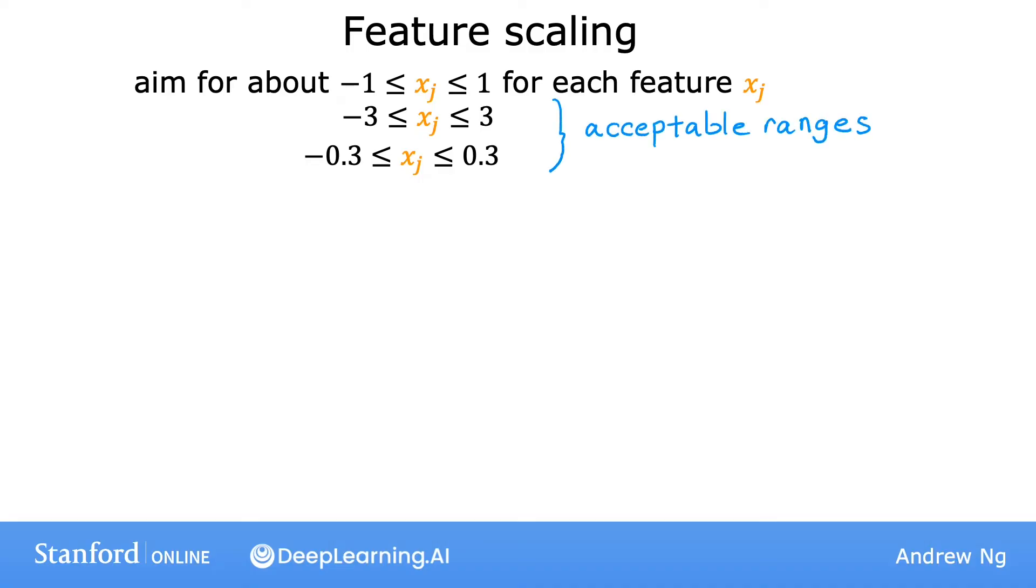So if you have a feature x1 that winds up being between 0 and 3, that's not a problem. And you can rescale it if you want, but if you don't rescale it, it should work okay too. Or if you have a different feature, x2, whose values are between negative 2 and plus 0.5, again, that's okay. No harm rescaling it, but it might be okay if you leave it alone as well.